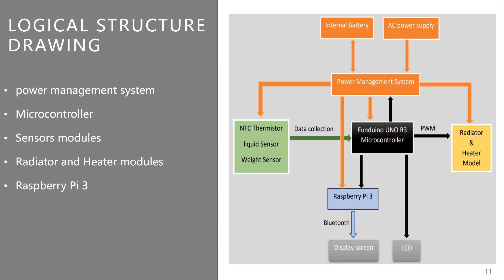The radiator and heater module starts working when it receives instructions from the microcontroller. Next is the Raspberry Pi 3. If the data needs to be output to a wireless device, I need the Raspberry Pi 3 to do it, as it has wireless transmission capability. In this project, I will use the Bluetooth function to connect to the monitor outside, allowing the device to display information on screen or send it to the user over the internet.